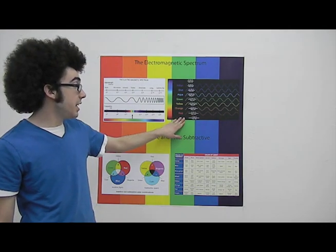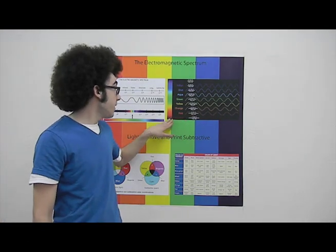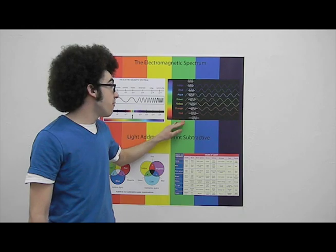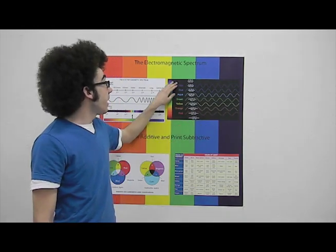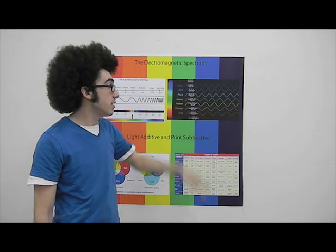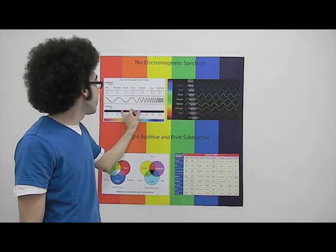As we can see illustrated here, we can see that red and dark red have very long wavelengths, while violet and indigo have very short wavelengths. So that shows the range of the electromagnetic spectrum that we can perceive.